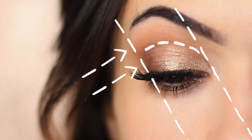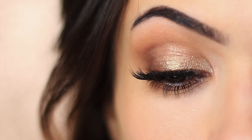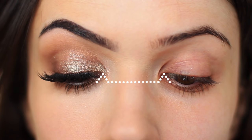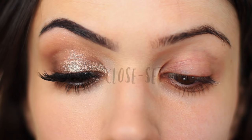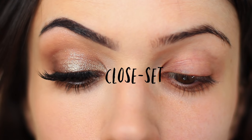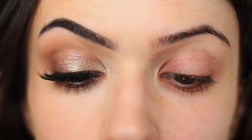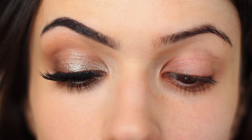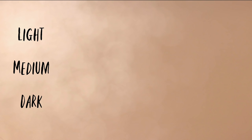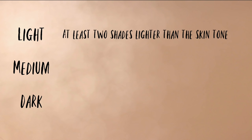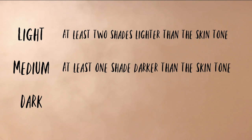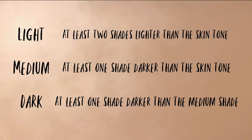Now let's use this theory and adjust it for close-set eyes. Close-set eyes are set closer to the nose, and this often creates a natural shadowing effect on that inner corner. So what we want to do is draw the eyes outwards, bringing that darkness out and bringing some light back in. We're still going to use a light, medium, and a dark. However, our light shade is now going to be at least two shades lighter than our skin tone. The medium shade remains the same — at least one shade darker. And the dark shade remains the same as one shade darker than the medium.